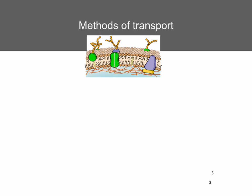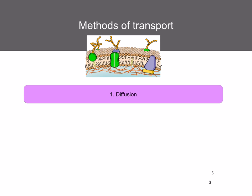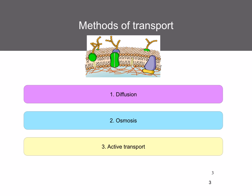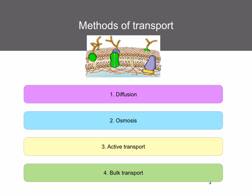All cells are surrounded by a partially permeable membrane that controls what substances can enter and exit a cell. There are several methods by which molecules and ions can cross the cell membrane. We've looked at diffusion in the last topic — today we're going to look at osmosis. There's also active transport and bulk transport. Diffusion is the net movement of particles from an area of high concentration to an area of low concentration, down their concentration gradient.